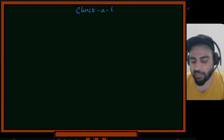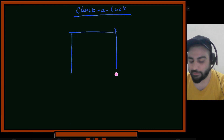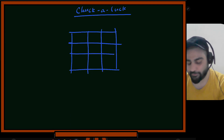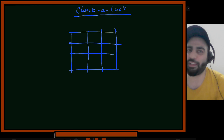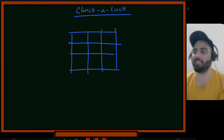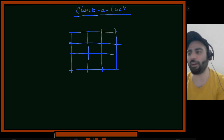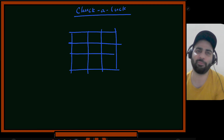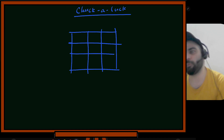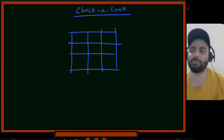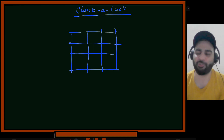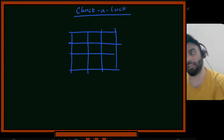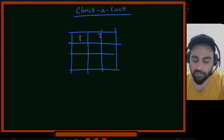A brief aside: experienced gamblers who know probability can evaluate whether the odds favor them. If they find even a slight edge, they can win consistently. That's why casinos hire probability experts to design games that always give the house an advantage. If a game has a flaw, a probability-savvy player can exploit it and drain the casino.